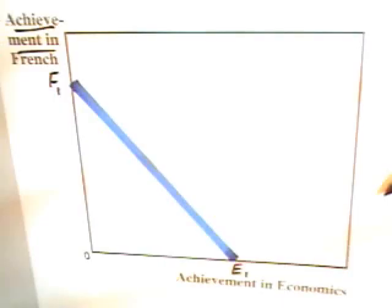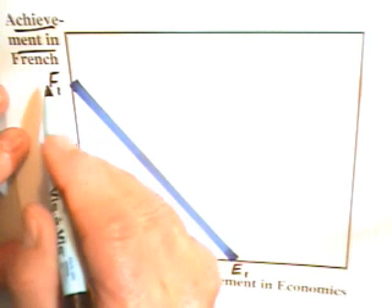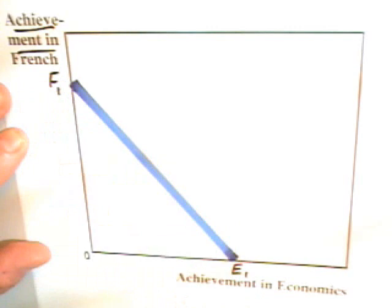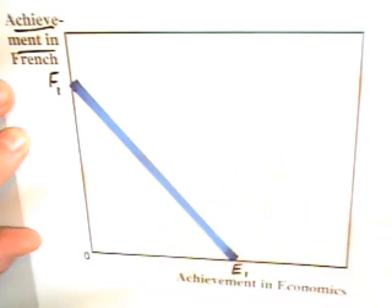We can turn to a graph. This graph may look like a demand curve, but it is not one. A demand curve would have price on the vertical axis. We have achievement in French on that axis. A demand curve would have quantity of a good on the horizontal axis. In this case, we have achievement in economics. We can start out by assuming that students have a given amount of work time that they can apply to both of these courses of French and economics.